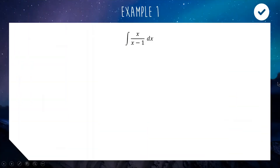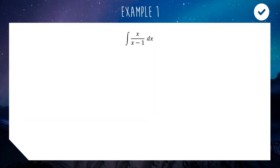Here is our first example — a relatively simple one. We are integrating x divided by (x−1). If this was just a constant up top it would be a piece of cake — we could use a logarithm — but the top and the bottom are the same degree; they're both linear terms. Here is the really clever way of writing this integral so we can split it apart into something more friendly to integrate.